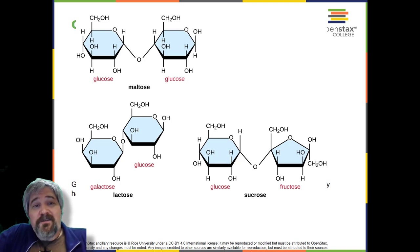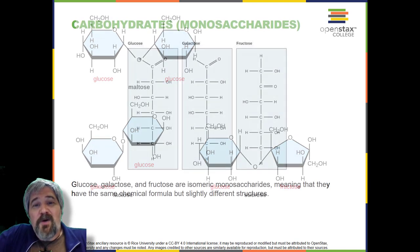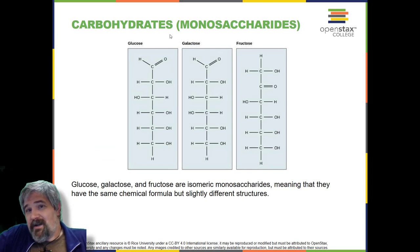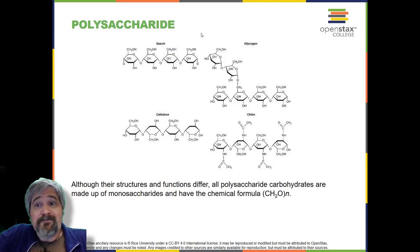A long chain of monosaccharides linked by covalent bonds is known as a polysaccharide (poly meaning many). The chain may be branched or unbranched, and it may contain different types of monosaccharides. Polysaccharides may be very large molecules. Starch, glycogen, cellulose, and chitin are examples of polysaccharides.